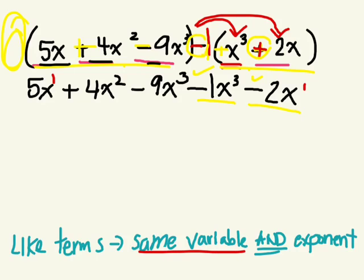We know all of these have the same variable, they all have x. We want to group the terms that have the same exponent. So let's start with 5x to the power of one. Which other term here has x to the power of one, and you want to include the sign in front of it? It's going to be negative 2x to the power of one. Okay, let's group the second one.